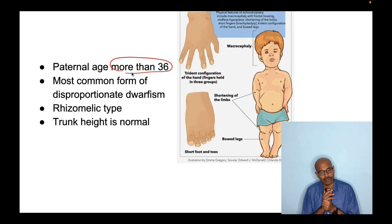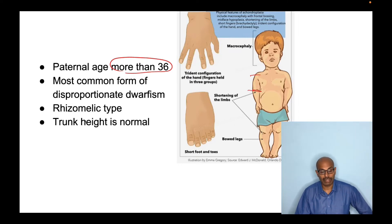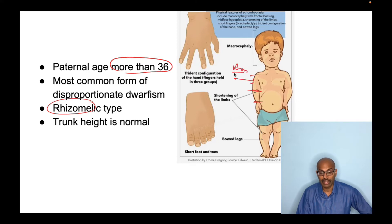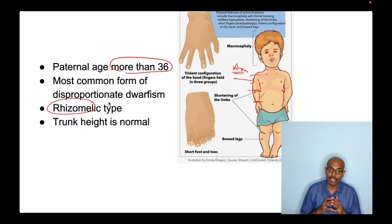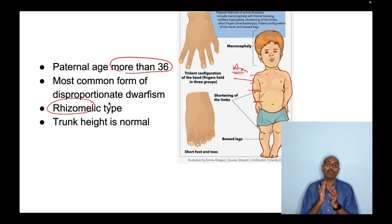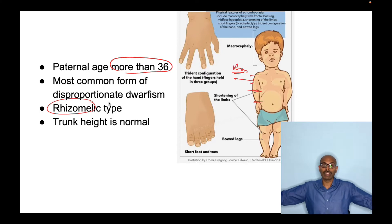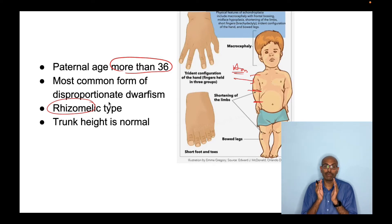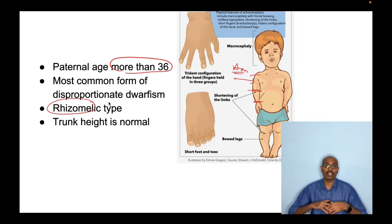Achondroplasia is a rhizomalic form of dwarfism — meaning there is greater shortening of the arm portion of the limb. Mesomalic refers to shortening of the forearm. In achondroplasia, the arm is much shorter than the forearm, making it rhizomalic. The trunk height is normal, the skull is normal since they undergo intramembranous ossification, but the arm span and leg length are reduced, giving very short and stocky tubular long bones.